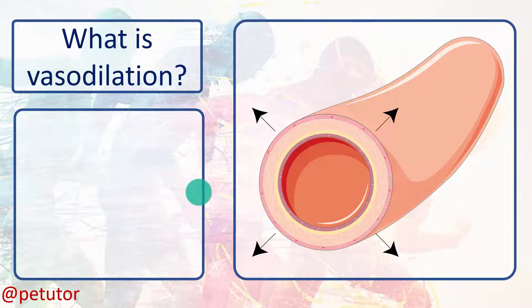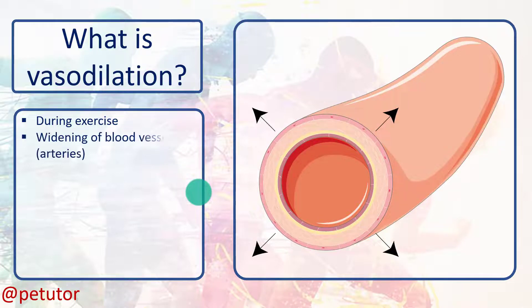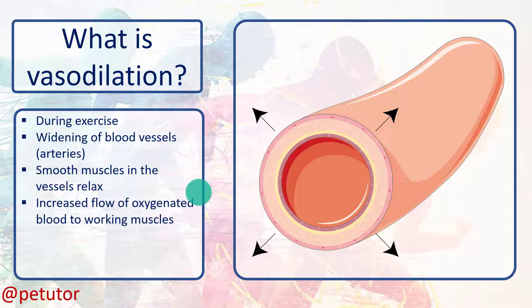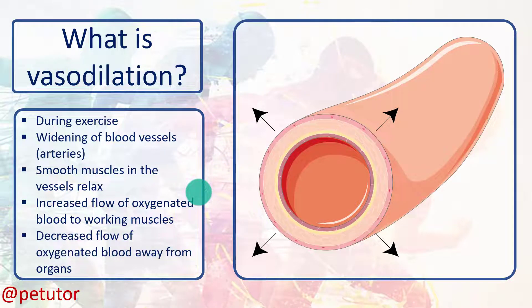There are three or four points to be aware of. First, we usually talk about vasodilation in PE in the context of physical activity — most often during exercise. When someone starts running, playing hockey, or playing netball, vasodilation is likely to take place. It's the smooth muscles within the vessels that relax, therefore increasing the diameter, which allows for an increased flow of oxygenated blood to the working muscles.